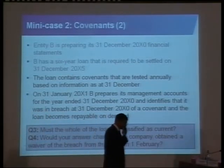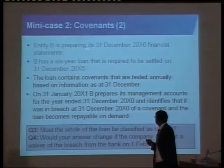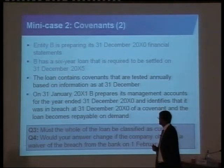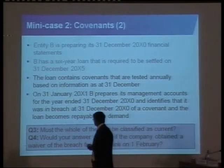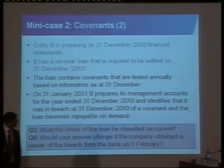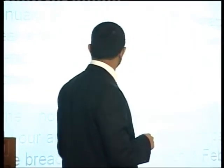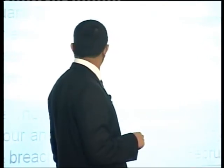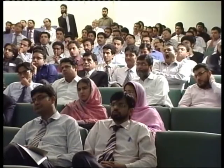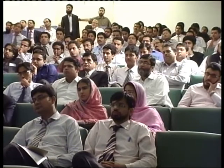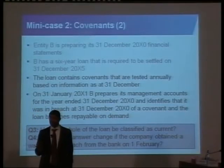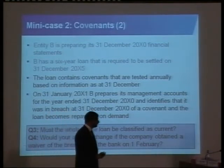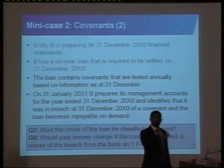Let's look at the second example with covenants — it gets more difficult, I promise. Entity B is preparing its 31st December financial statements. It has a six-year loan required to be settled on 31st December 2005. The loan contains covenants that are tested annually based on information as at 31st December. On 31st January, B prepares its management accounts for the year end and identifies that it was in breach at 31st December of a covenant, and the loan becomes repayable on demand.